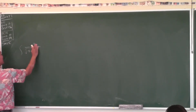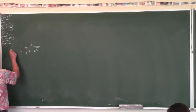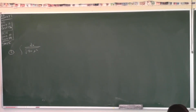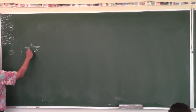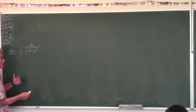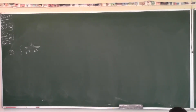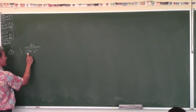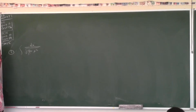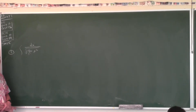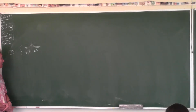So problem 2: integral of √(9 plus X squared) dx with no X in the numerator — you do a trig substitution. If it's a² plus X², use tangent. If it's X² minus a², use secant. If it's a² minus X², use sine. You've got to follow that chart.